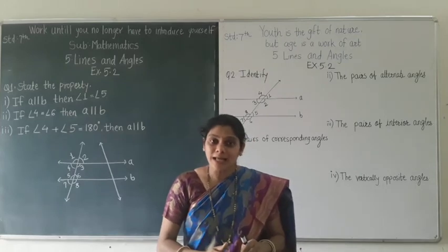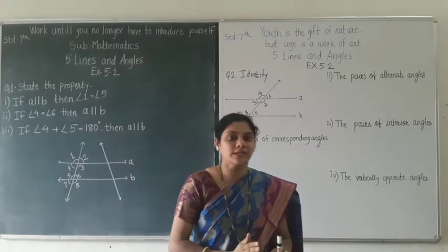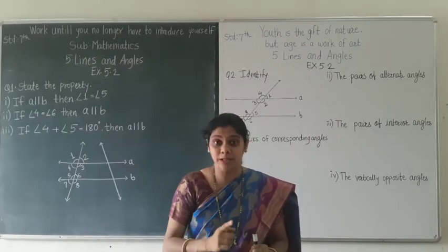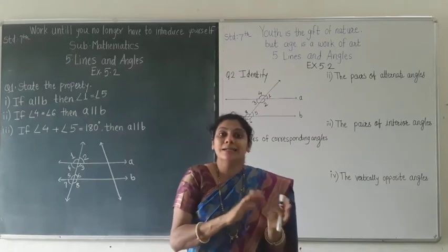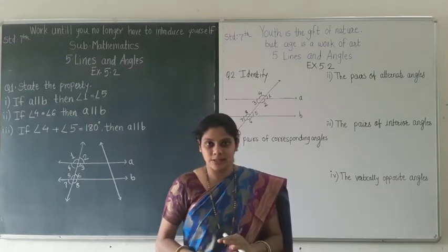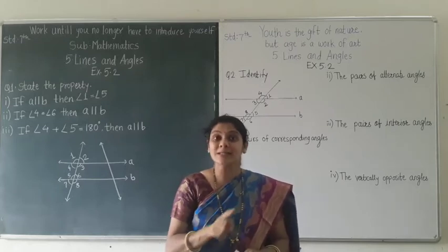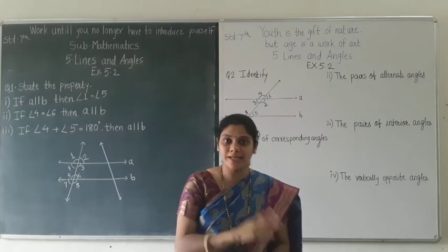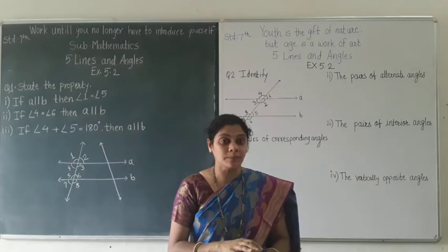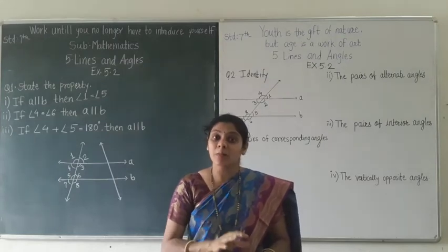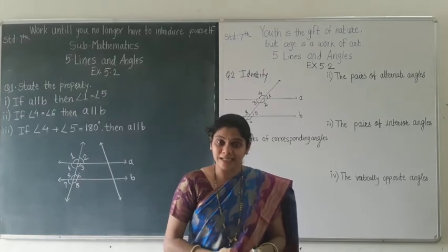Corresponding angles look at the same side of the transversal and show the same direction. Alternate angles are at different sides of the transversal — they are on opposite sides and show different directions. This is the main difference between corresponding angles and alternate angles. Interior angles are located on the inner side of the diagram, and the sum of their measurements is 180 degrees.